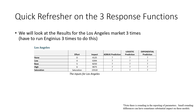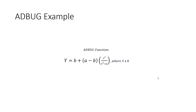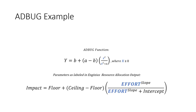The adbug function is presented in the form where y is the outcome, x is the input, and there are four parameters to estimate: a, b, c, and d. It typically takes on an S-shaped curve. In InGenius, the parameters are labeled as floor, ceiling, slope, and intercept. Ceiling is the absolute highest sales achievable no matter how many salespeople we deploy, and floor is the absolute minimum sales regardless of how few salespeople we have.